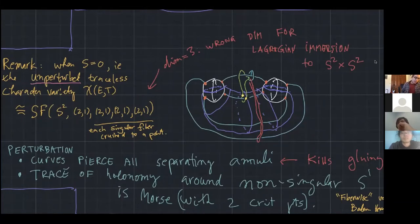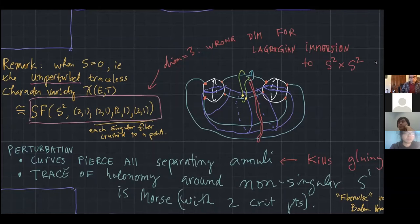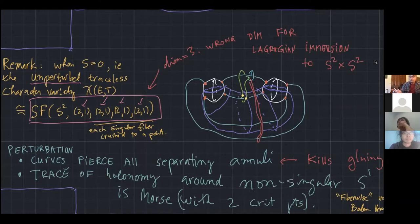If you just look at the tangle with the earring itself, it's easy to see that its flat traceless moduli space is obtained from a Seifert fiber space over the two-sphere with four singular fibers, each of index two. That's a smooth three-manifold, but if you collapse those four singular fibers each to a point, you get a singular three-manifold whose singularities have neighborhoods that are cones on a torus. So it's not a two-dimensional manifold — we're not going to get a Lagrangian immersion; we'd be mapping from a three-manifold into the product of two spheres.